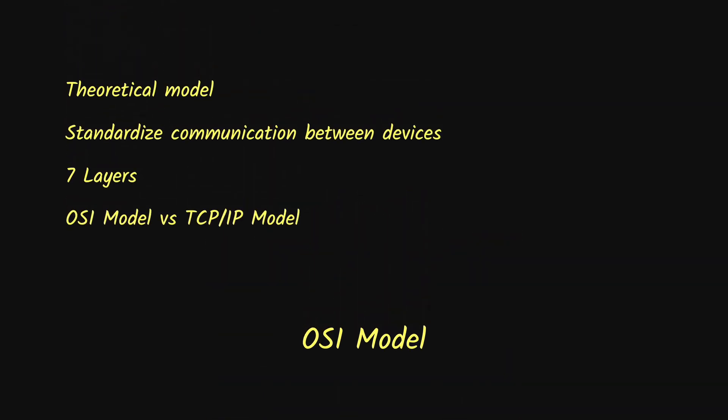OSI is a theoretical model which was proposed to standardize the communication between devices over a network. By theoretical I mean that there is no practical implementation of the model — it is just a conceptual model which describes how an application might work over the network. It has seven layers which are used to visually describe how devices communicate with each other.